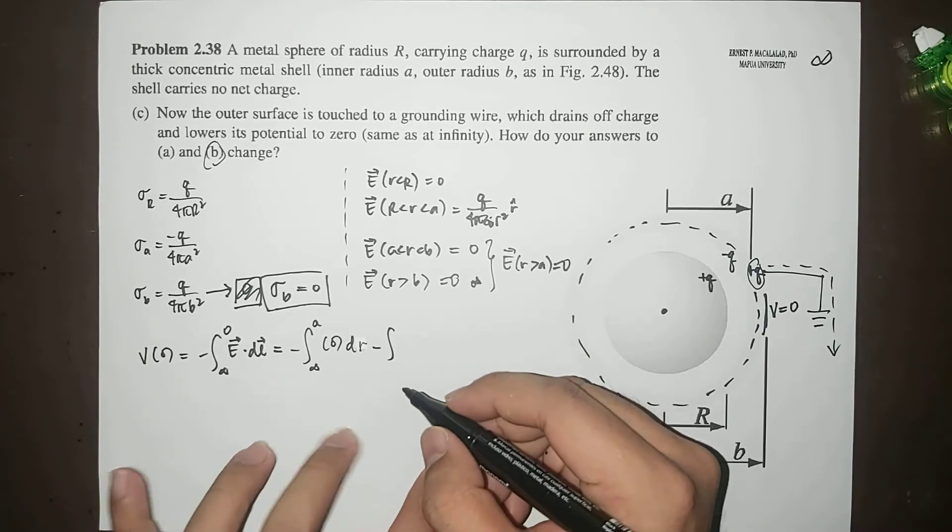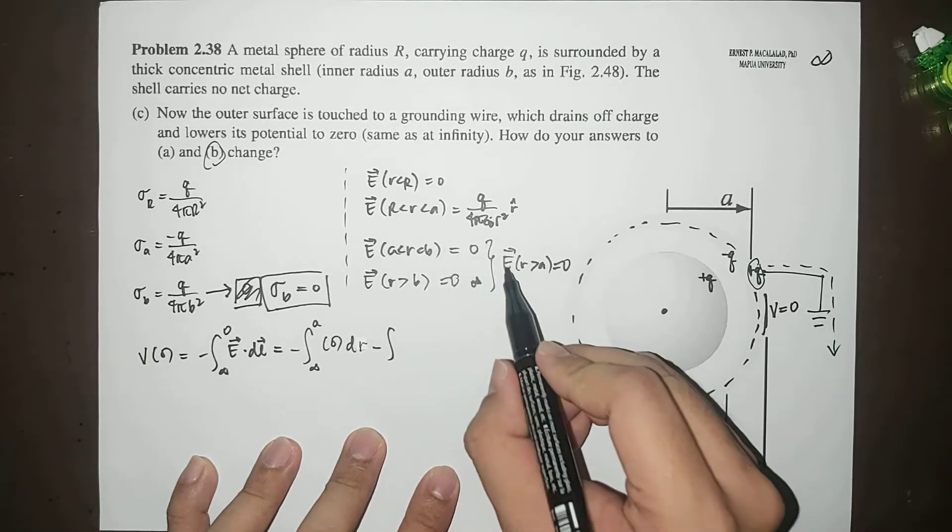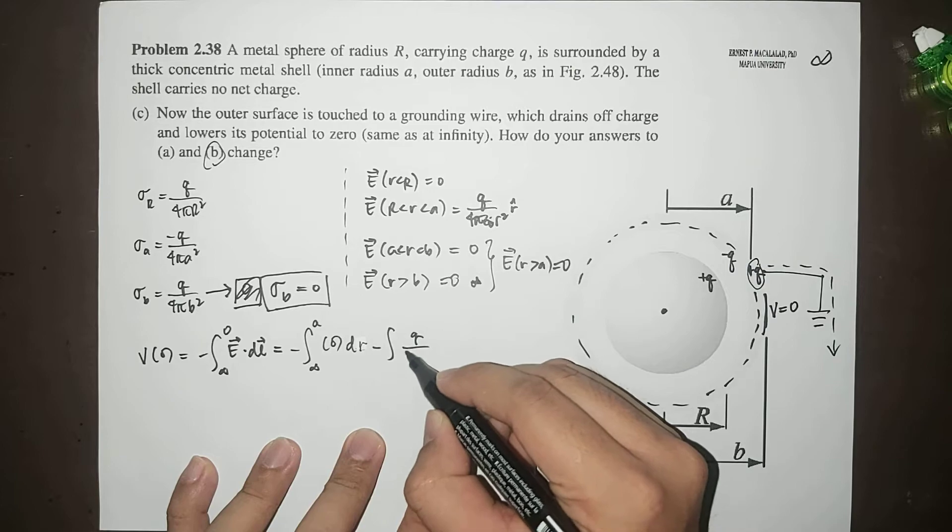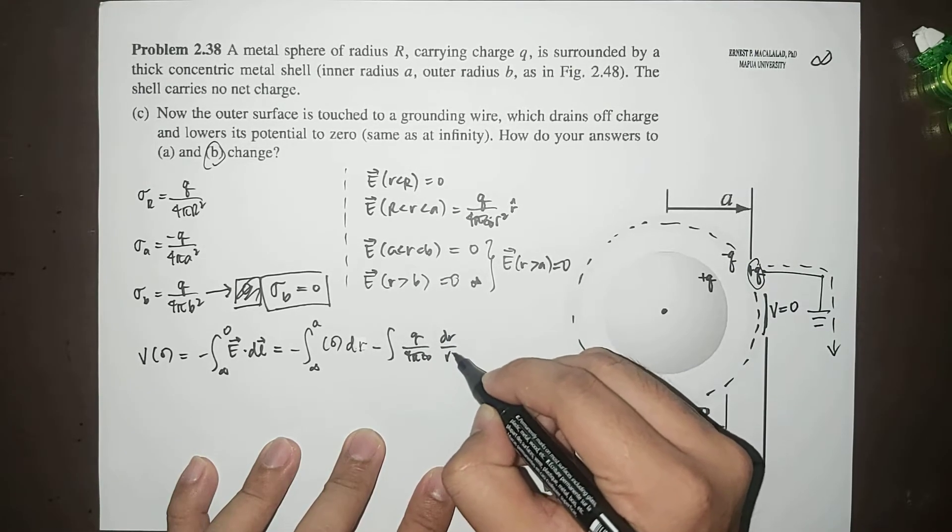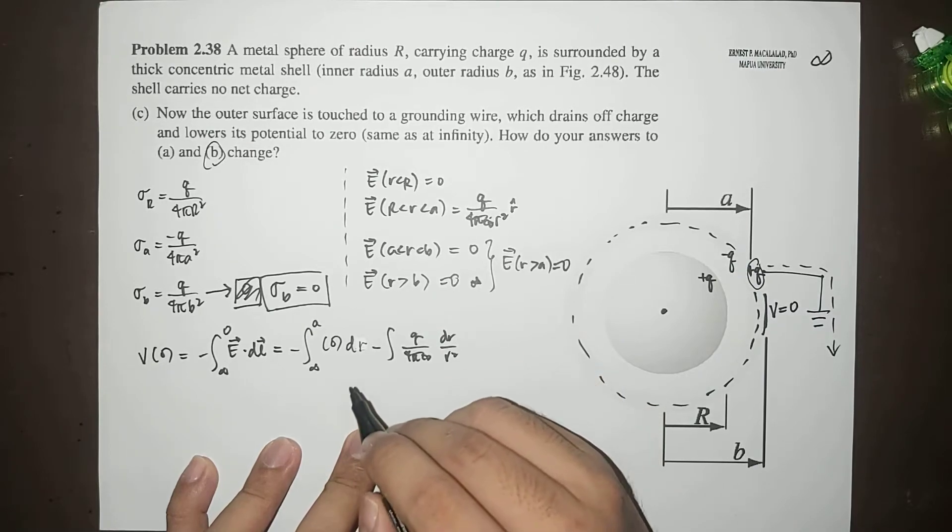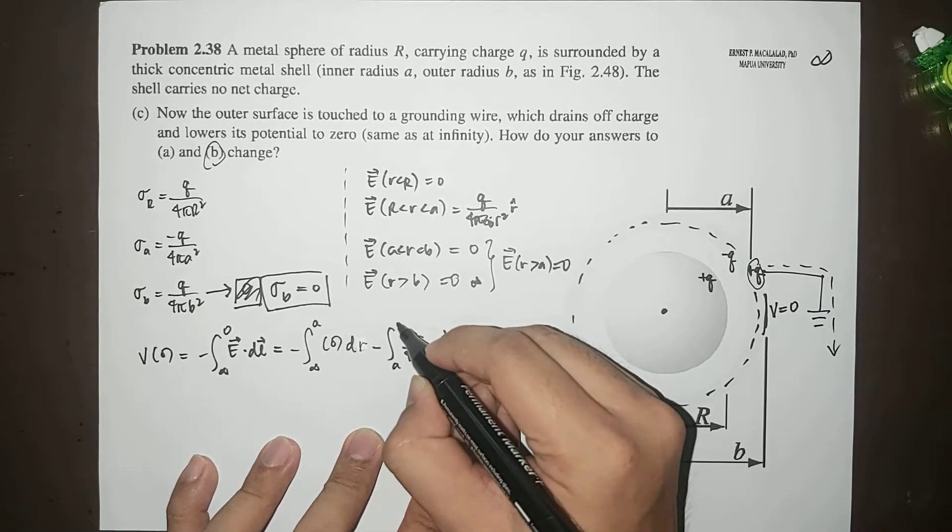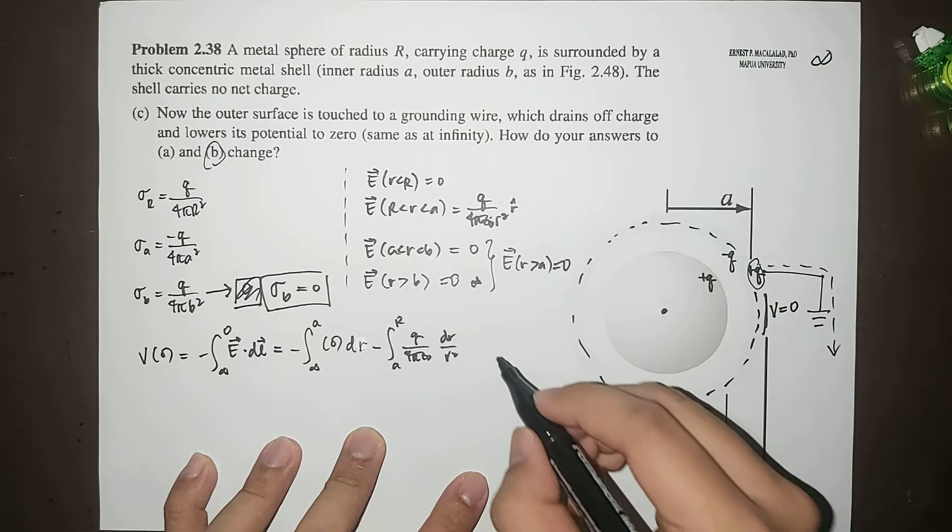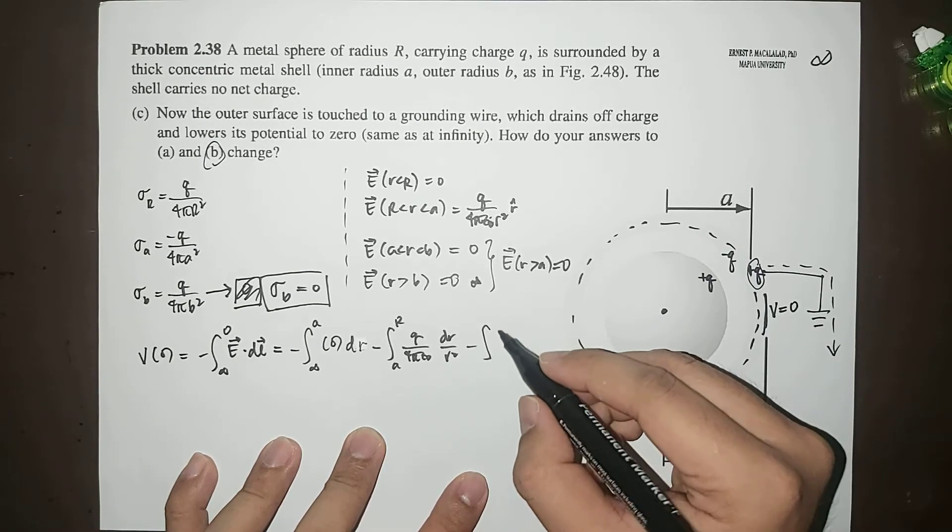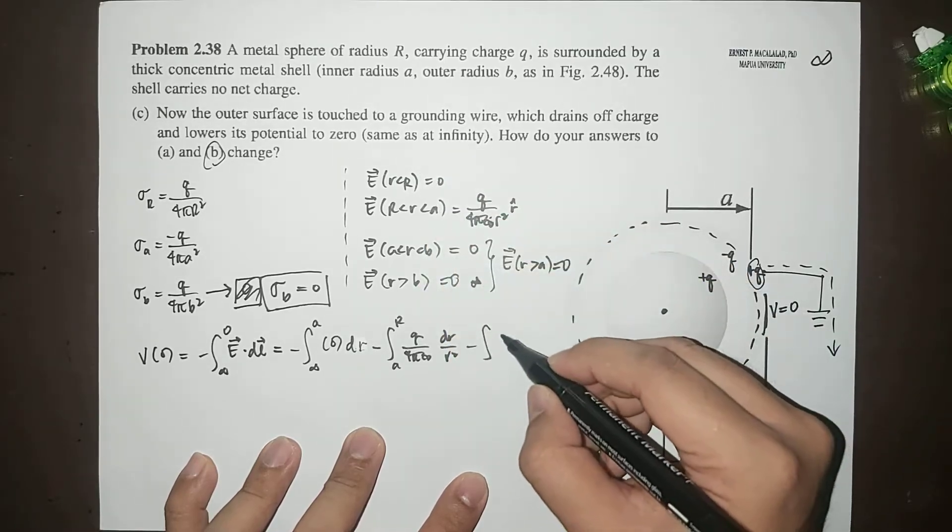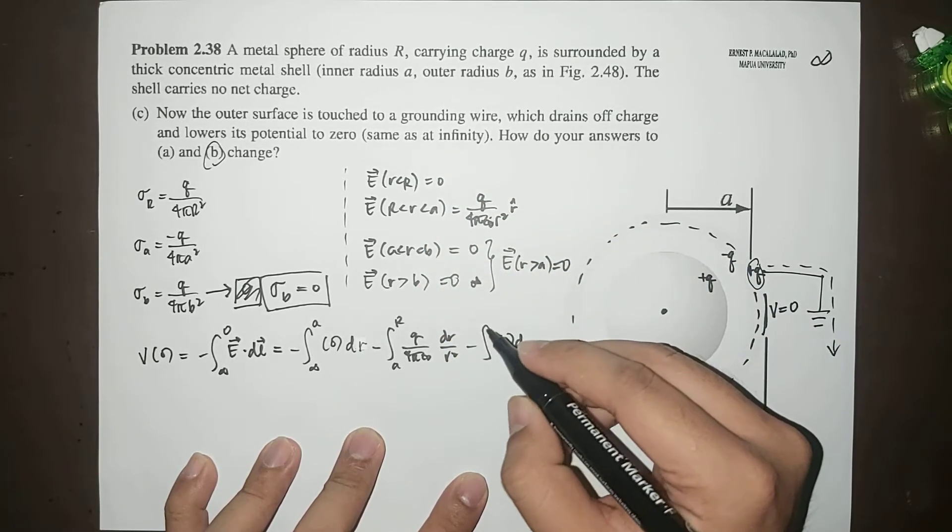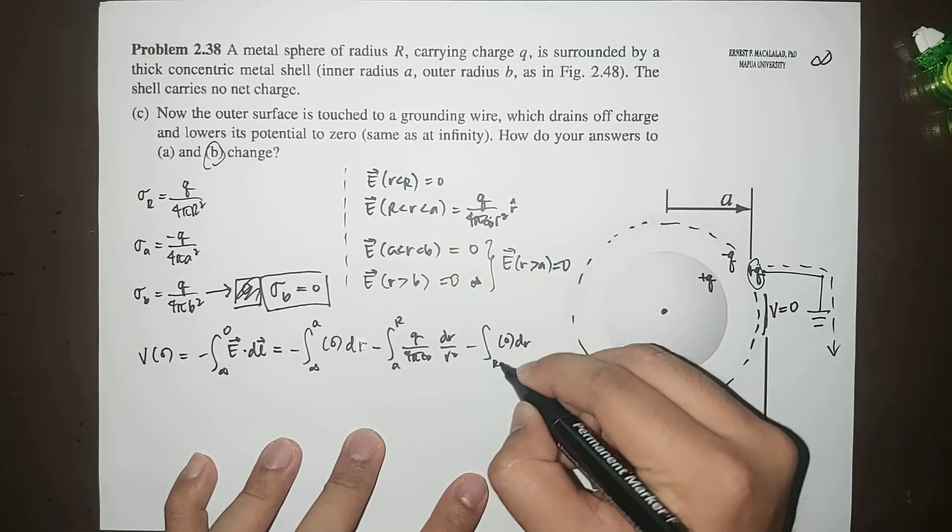minus integral of Q over 4πε₀ dR over r squared integrated from A to R, minus integral of the electric field which is zero dR from R to zero.